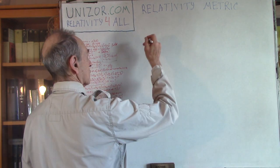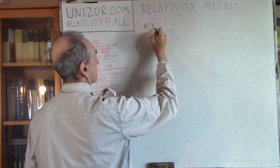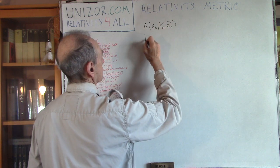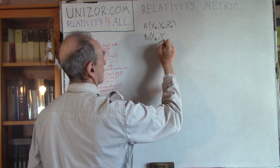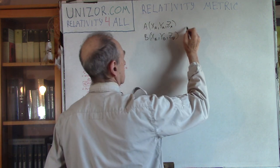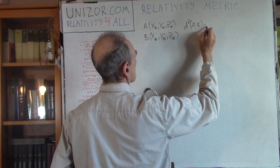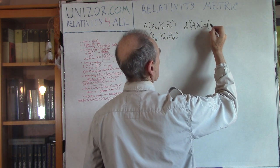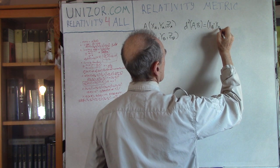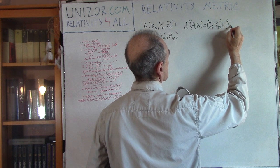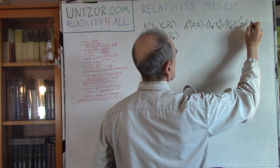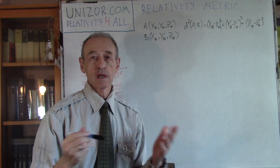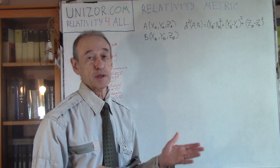Let's say you have two points: point A with coordinates X_A, Y_A, and Z_A, and point B with corresponding coordinates. The square of the distance between these two points — that's the Euclidean distance expressed in coordinate form — is the difference between the X's squared, plus the difference between the Y's, plus the difference between the Z's. This formula is a result of applying the Pythagorean theorem.